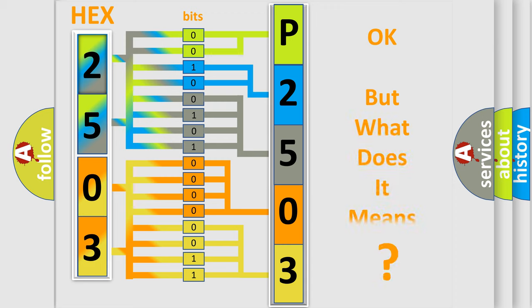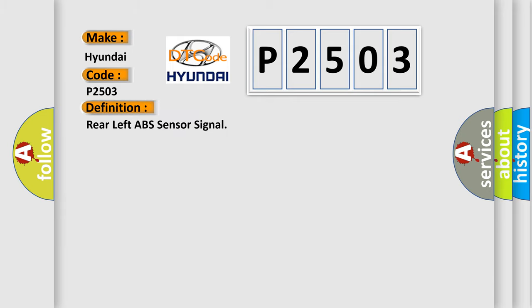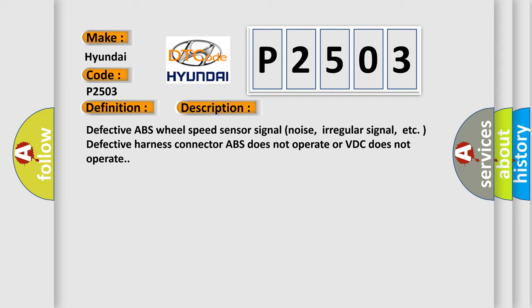We now know how the diagnostic tool translates received information into a more comprehensible format. The number itself does not make sense unless we know what it actually expresses. So, what does the diagnostic trouble code P2503 interpret specifically for Hyundai? The basic definition is: Rear Left ABS Sensor Signal. A short description of this DTC code includes: defective ABS wheel speed sensor, defective ABS, defective harness connector, ABS does not operate, or VDC does not operate.